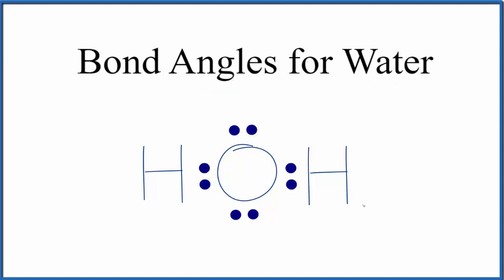So when we look at the Lewis structure here, it looks like the bond angle between the hydrogen and the oxygen would just be linear. And that's part of the problem with Lewis structures. They don't really show us the shape of the molecule.